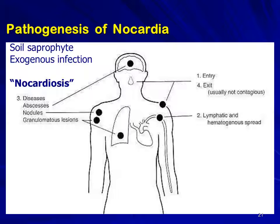In pathogenesis, Nocardia are soil saprophytes and people acquire infection exogenously — from soil or the environment — unlike Actinomyces which cause endogenous infection. They enter by inhalation and can spread to lymphatics and then to blood, producing hematogenous lesions including brain abscesses, nodular skin lesions, and granulomatous lesions in the chest.